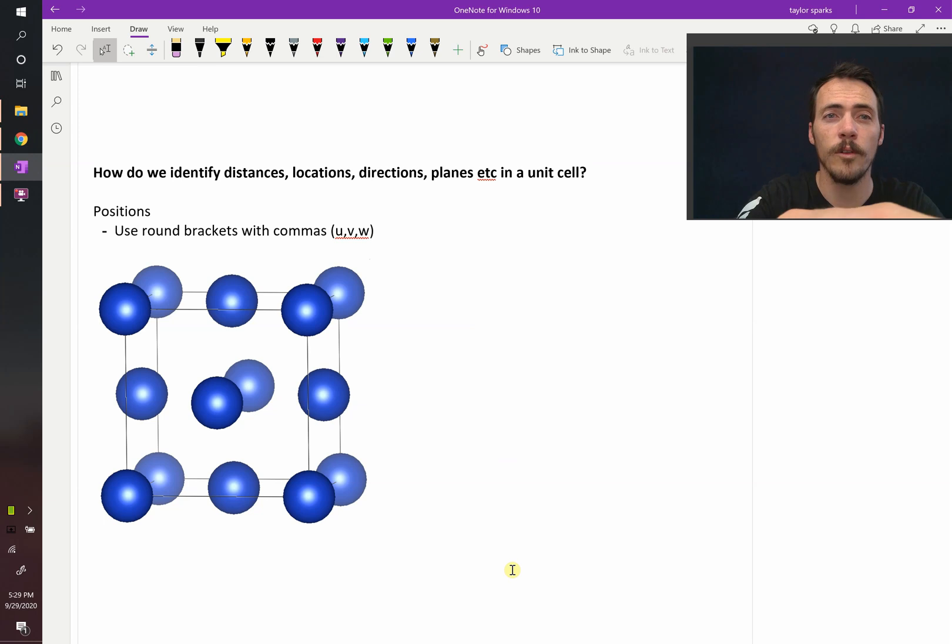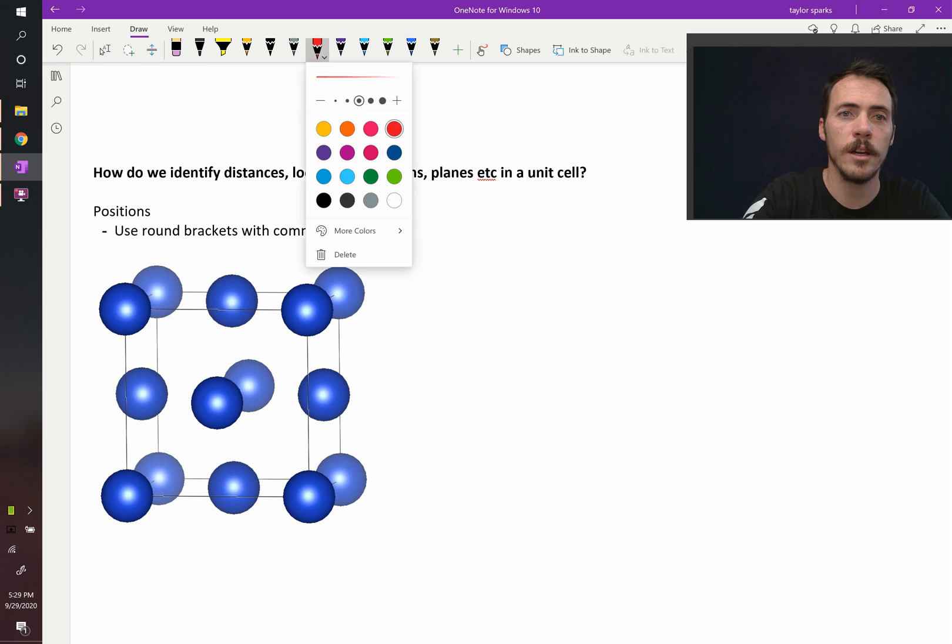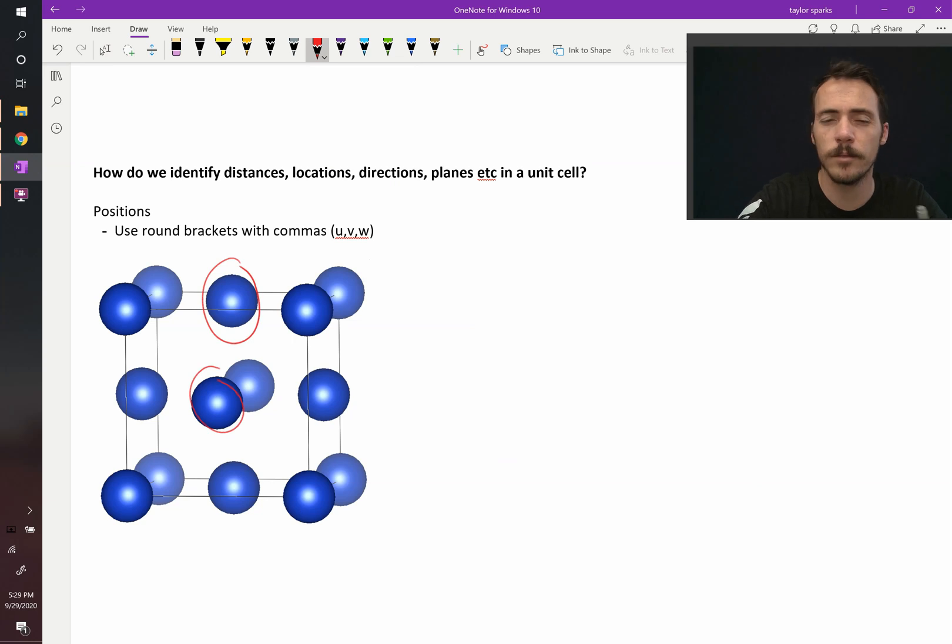That means it would be really helpful if I had a way to differentiate this atom from that atom. How do I talk about those? Well, we need a way to point out positions in the lattice. Here's how we do it. We use what's called Miller indices. The first thing we do is we pick an origin.